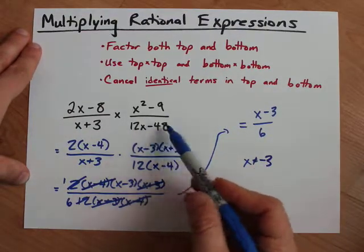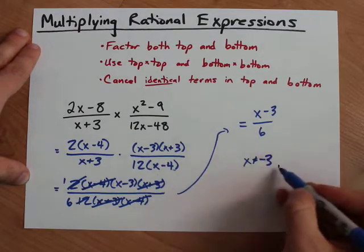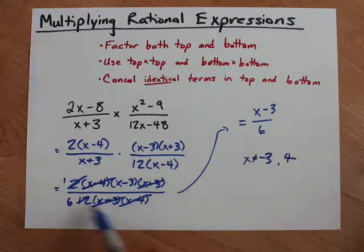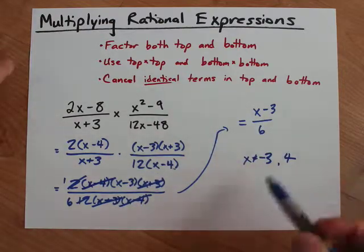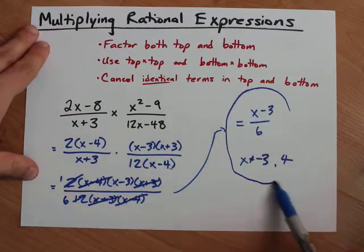Here, x can't have been positive 4. That's more apparent here. Nothing else was ever on the bottom of a fraction. So these are the only two restrictions. And this is our final answer.